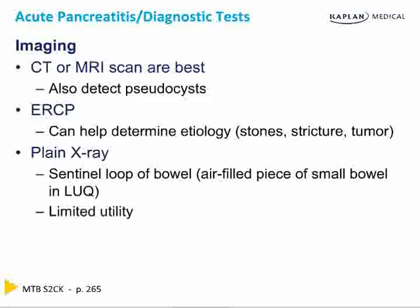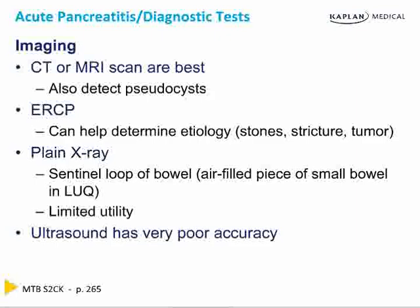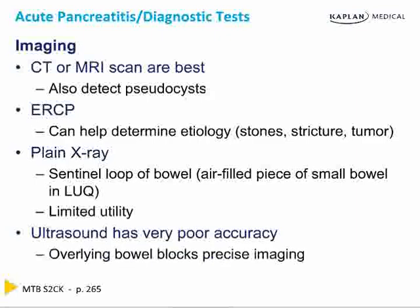A plain flat x-ray of the abdomen could show a sentinel loop of bowel — an air-filled piece of small bowel in the left upper quadrant — but it has extremely limited utility and we never do it. An ultrasound has very poor accuracy because overlying bowel blocks precise imaging of the pancreas.